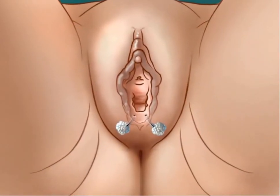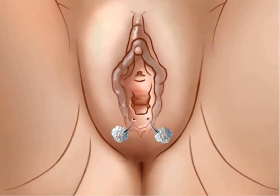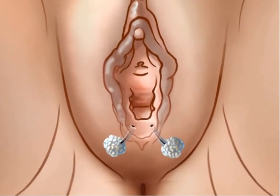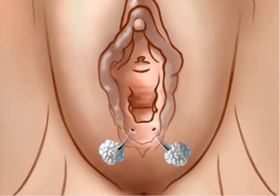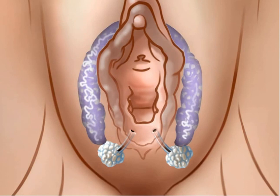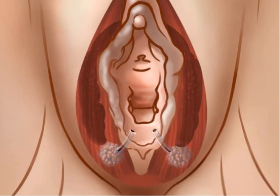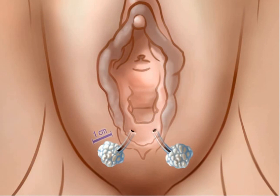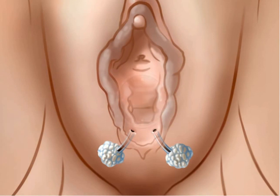The Bartholin glands, also known as the major vestibular glands, are found on both sides of the vaginal opening. They lie inferior to the vestibular bulb and deep to the bulbo-cavernous muscle. These glands are approximately one centimeter in diameter. Their ducts are 1.5 to 2 centimeters long and open just distal to the hymenal ring at 5 and 7 o'clock.